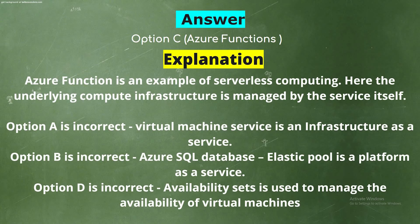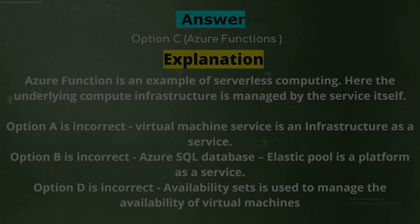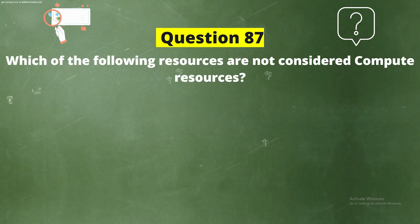Explanation: Azure Functions is an example of serverless computing — the underlying compute infrastructure is managed by the service itself. Option A is incorrect — Virtual Machine service is an Infrastructure as a Service. Option B is incorrect — Azure SQL Database Elastic Pool is a Platform as a Service. Option D is incorrect — Availability Sets is used to manage the availability of virtual machines.